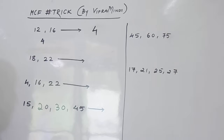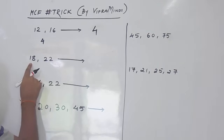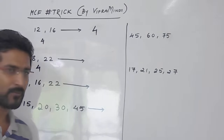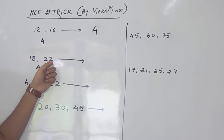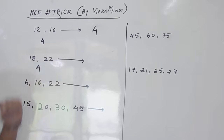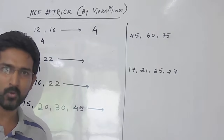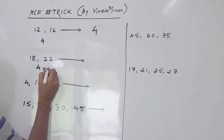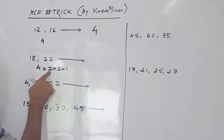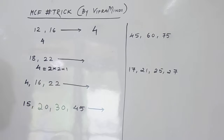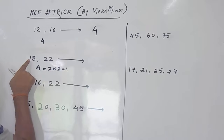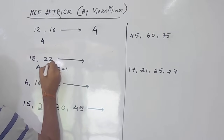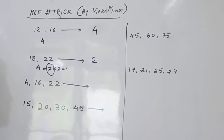Now we'll see the next one: 18 and 22. Again the difference between 18 and 22 is 4. Now whether 4 is the divisor of 18 and 22? No, 4 is not the divisor of 18 and it is also not the divisor of 22. So what we have to do is find out the factors of 4, which is 2 × 2 × 1. Now 2 is the divisor of 18 and 2 is also the divisor of 22, so the HCF is 2.